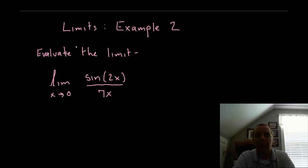Here's another popular limit example. Evaluate the limit as x approaches zero for sine of 2x over 7x. Often times these numbers 2 and 7 will be changed, they'll be different values here.